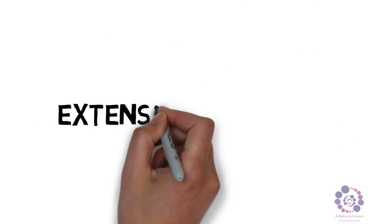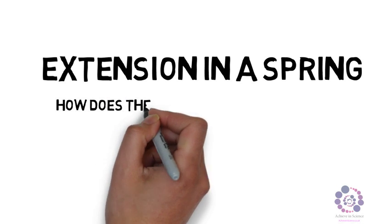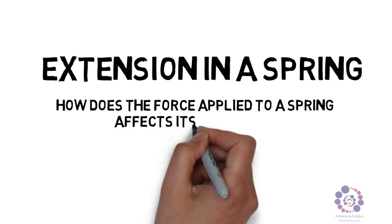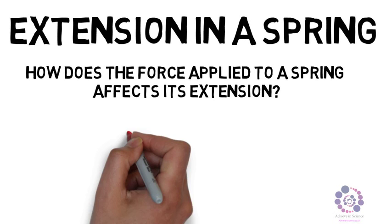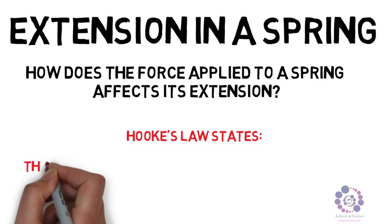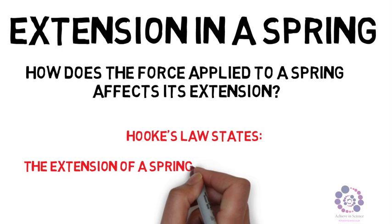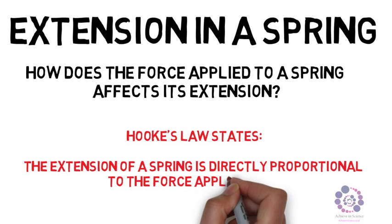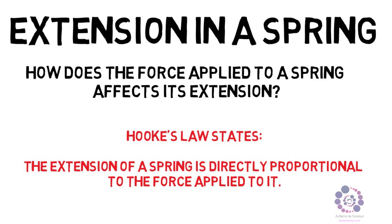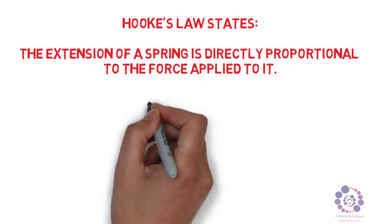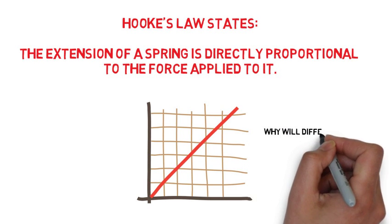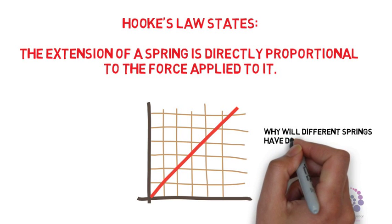Now, let's look at an extension of a spring, and how does the force applied to a spring affect its extension? This is all related to Hooke's law. Hooke's law states the extension of a spring is directly proportional to the force that is applied to it. We can draw a graph to show this relationship. As it is directly proportional, we will have a straight diagonal line, as shown on the screen. The question is, why will different springs have different gradients?